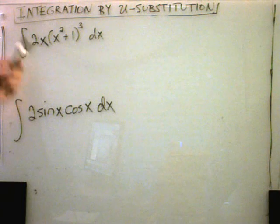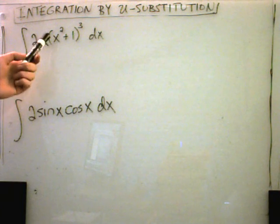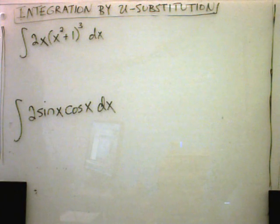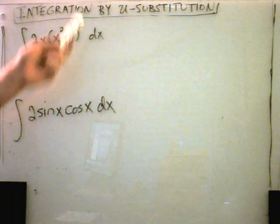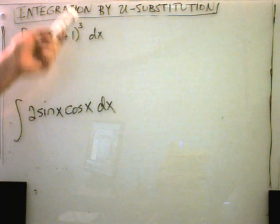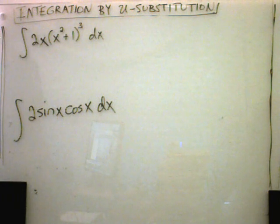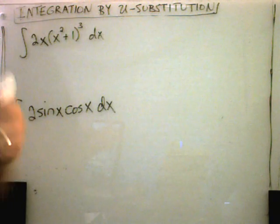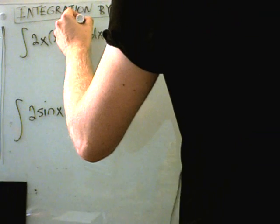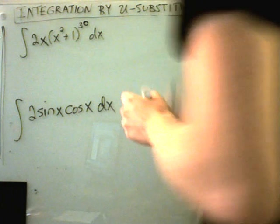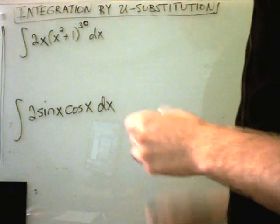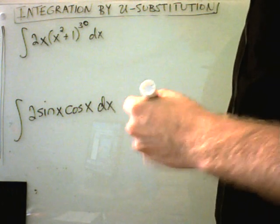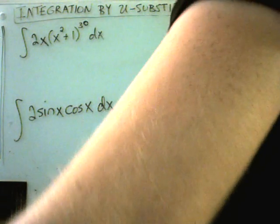So notice this first problem. We have 2x times the quantity x squared plus 1 cubed. And if you had to, you could always just cube out the x squared plus 1 term and distribute it by the 2x. But what if we make this one a little harder? What if we raise it to the 30th power? Definitely, you're probably not going to want to multiply that one out now.